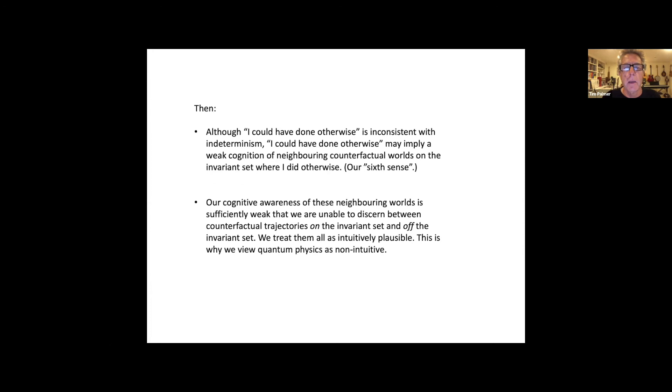The first point then is 'I could have done otherwise' may in fact imply this notion that we have a weak cognition of these neighboring counterfactual worlds on the invariant set in the p-adic neighborhoods. It's not that we actually could have done otherwise, but we have a cognition of these neighboring worlds where we did actually do otherwise, because by definition they are worlds which are not identical in state space to our actual world. This could be our sixth sense. On the other hand, our cognitive awareness of these neighboring worlds may be sufficiently weak that we're actually unable ourselves as humans to discern between counterfactual trajectories on the invariant set and counterfactual trajectories off the invariant set.